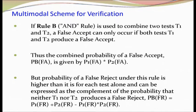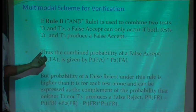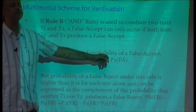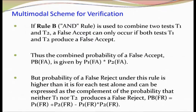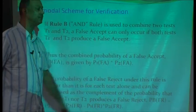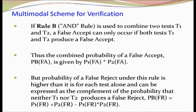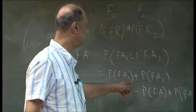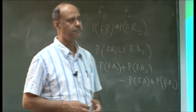For the AND rule (conjunctive case), a person is falsely accepted only when they are falsely accepted in both traits, and since both are independently distributed, the formula is: FAR = p1_fa × p2_fa. Similarly, you can derive the false rejection rate formula for the AND rule by substituting the rejection probabilities. The false rejection rate for the AND rule follows the union formula analogously.